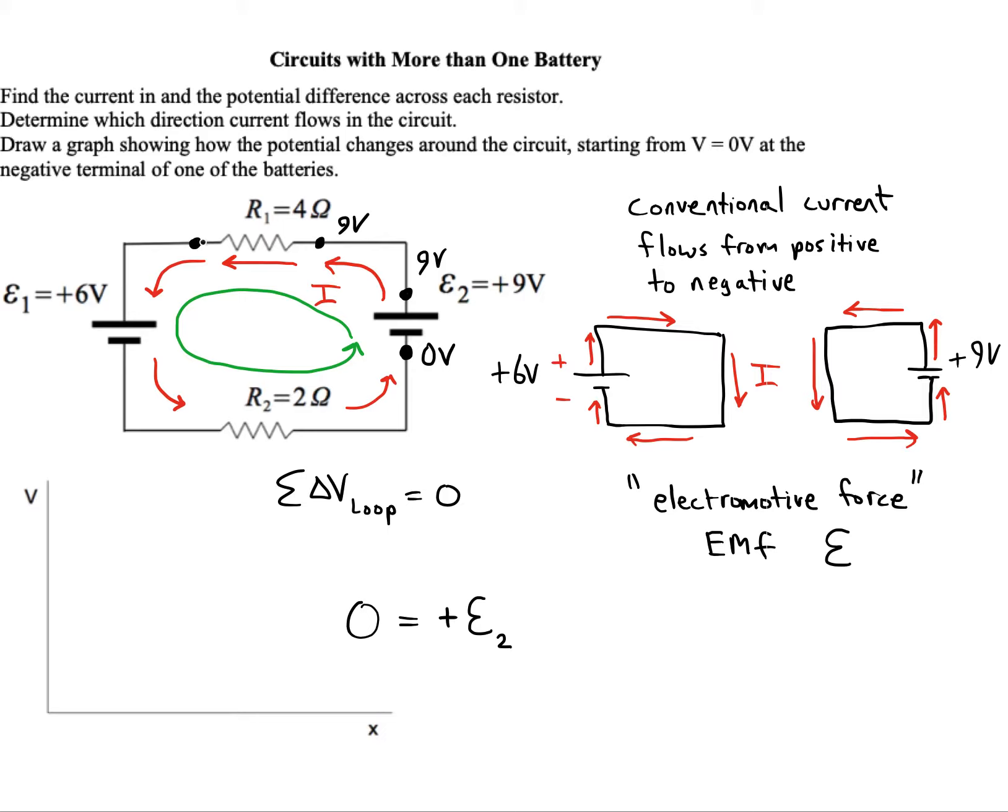So one way to express that is minus delta V of R1 would be one way to say it, but an even better way would be I times R1. What I did was I replaced the potential drop in the resistor with Ohm's law being the current times the resistance. Now we'll be at a new voltage which I don't know what it is yet. I'll call it the voltage at point A. We'll stay at that voltage until we get to the battery.